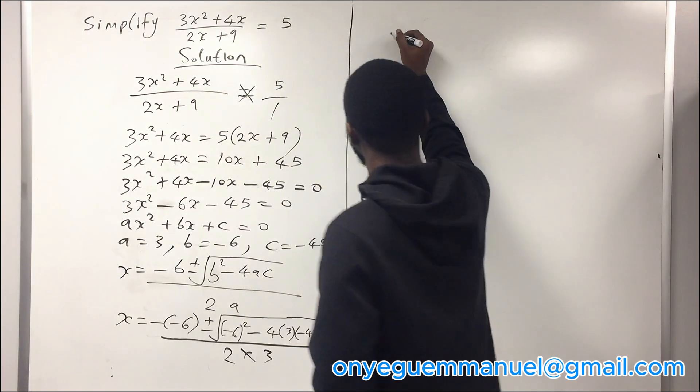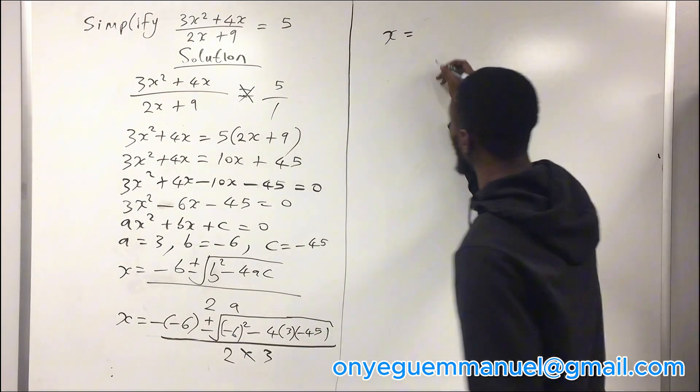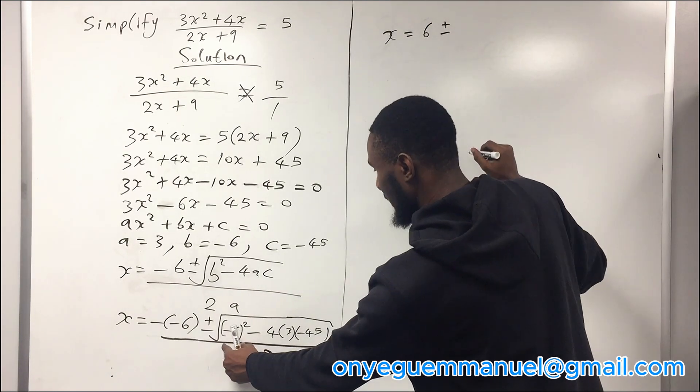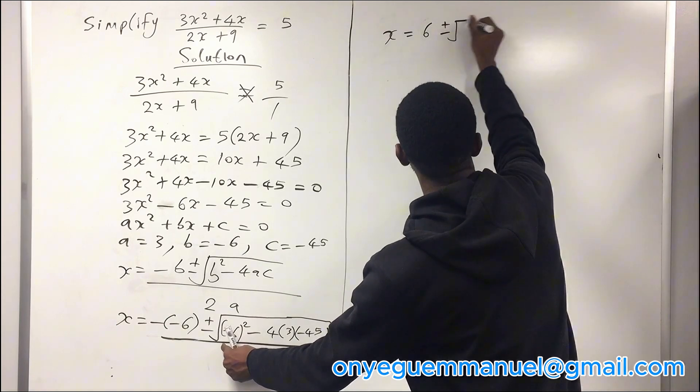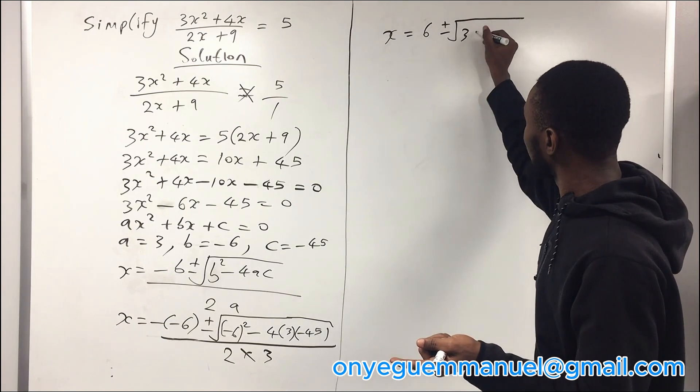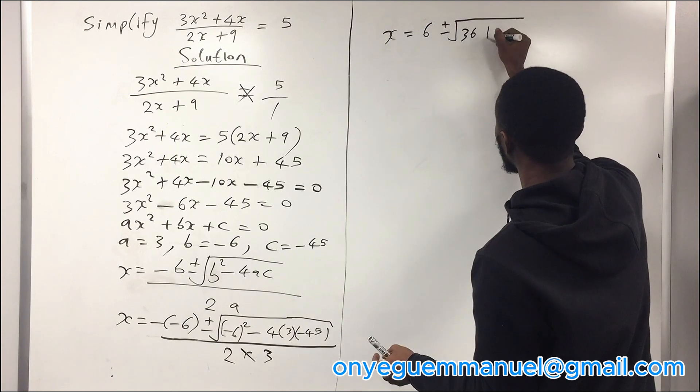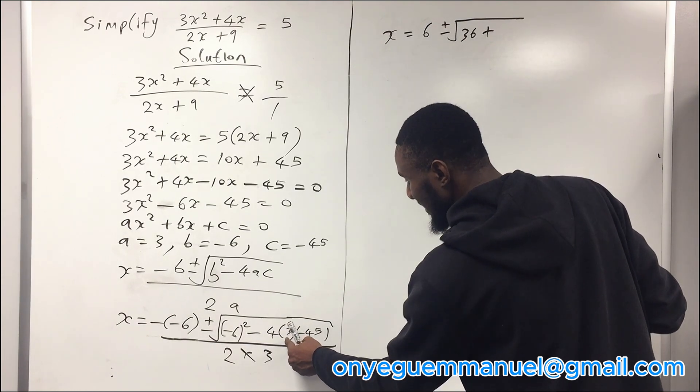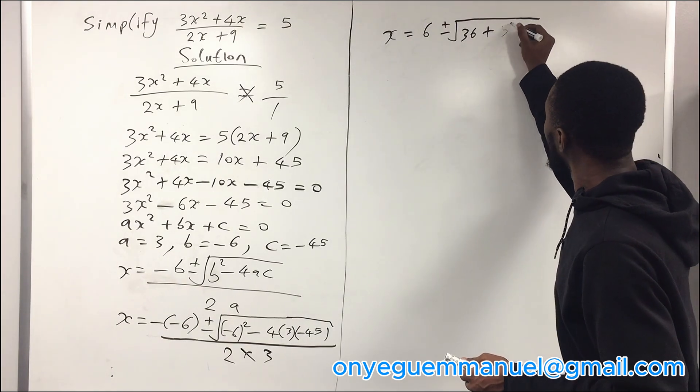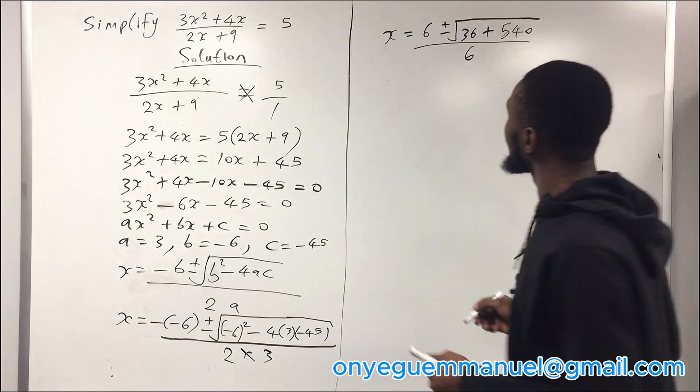We simplify further by saying x equals minus times minus will give you plus, so we have 6 plus or minus square root of minus 6 raised to power 2 will give you 36. Minus times minus will give you plus, 4 times 3 will give you 12, 12 times 45 will give you 540 over 6.